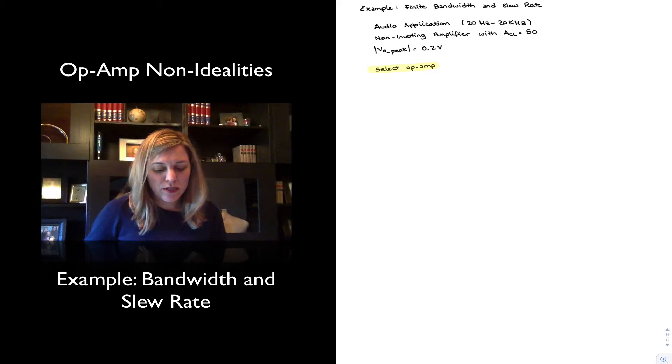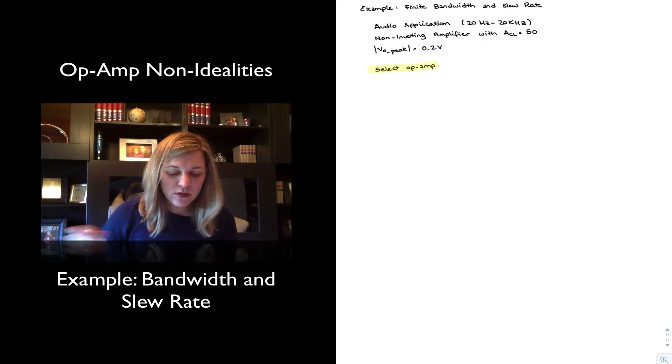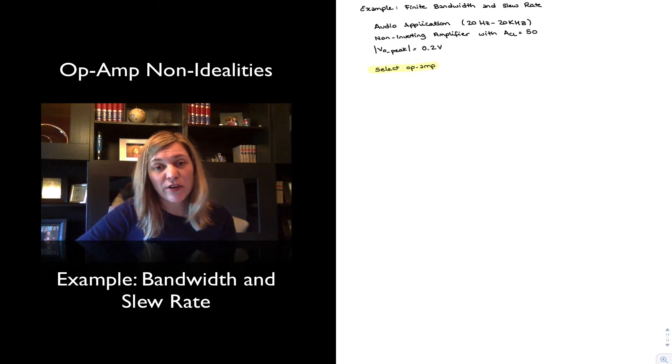Hello. In this video, we're going to deal with a practical example of how to select an op-amp for a particular application given a set of constraints. In this case, we're going to be constrained by the AC characteristics of the op-amp. Let's imagine that we have a non-inverting amplifier which we intend to use in an audio application, which means that our frequency range is going to go up to 20 kilohertz. That's the audible range.